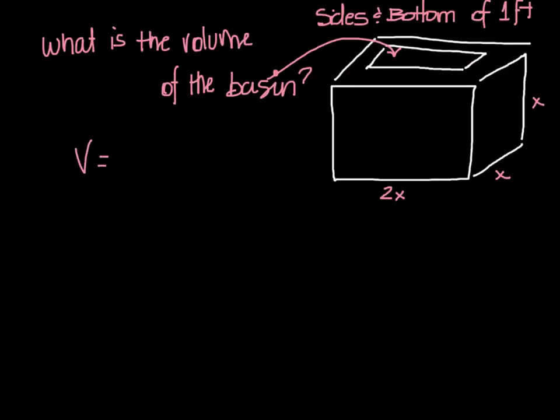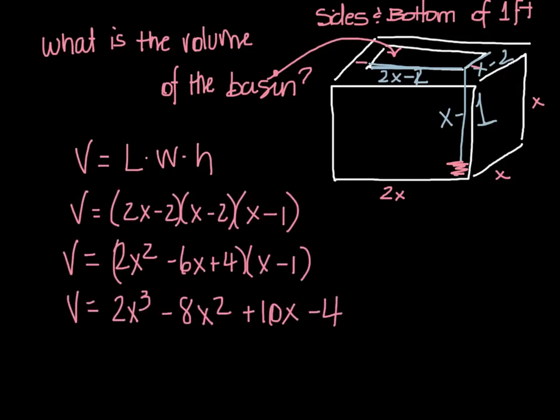So if I want to know the volume of the basin it's going to be length times width times height. Don't forget this side right here would be 2x minus 2, this side right here would be x minus 2, and the depth of this would be x minus 1. Okay don't forget that on all of the sides on the top I'm subtracting off 2 sides but on the bottom I'm only subtracting off 1. Here I go all the way to the height so then I just plug it in and foil it out and that would be your answer.